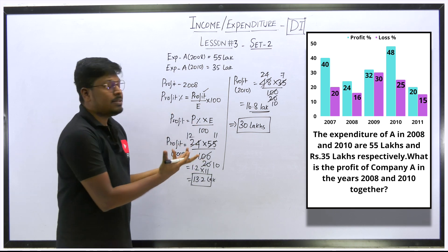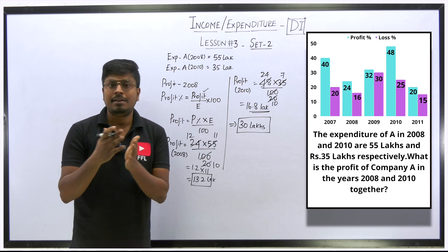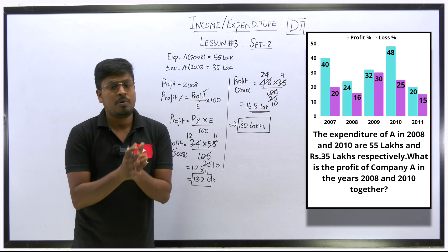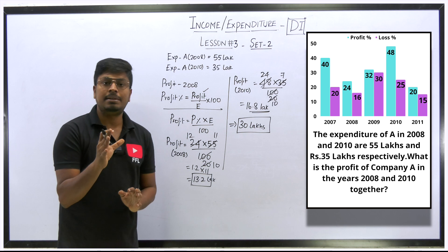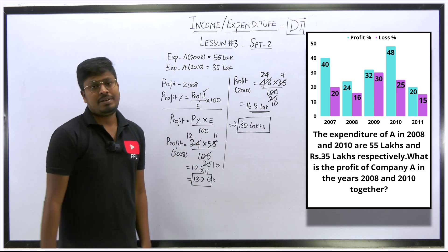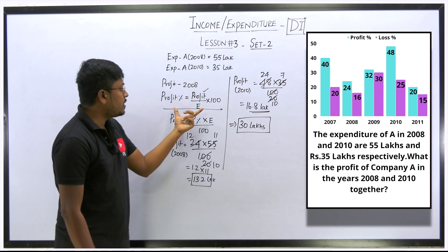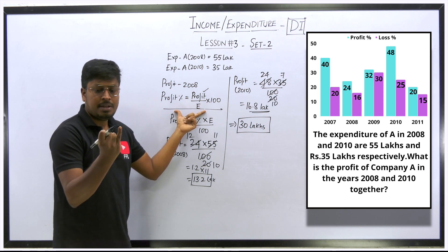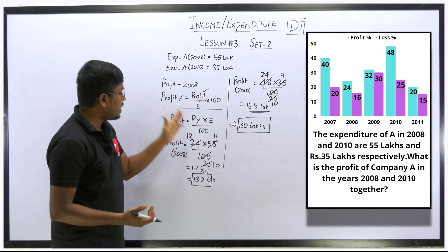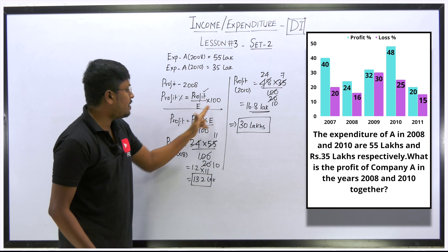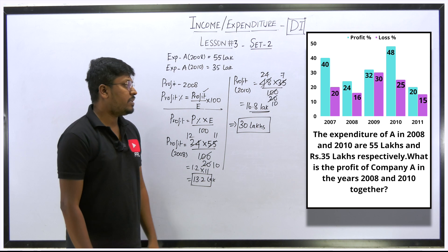Even if you make mistakes in calculation, that's okay — you can correct those with practice. But without knowing the concept you can't solve the question. The key concept here: from the formula profit percentage equals income minus expenditure divided by expenditure into 100, we rearranged to profit equals profit percentage into expenditure divided by 100. We substituted the profit percentage from the chart and the expenditure from the question, and found the profit for both years. Answer: 30 lakhs.